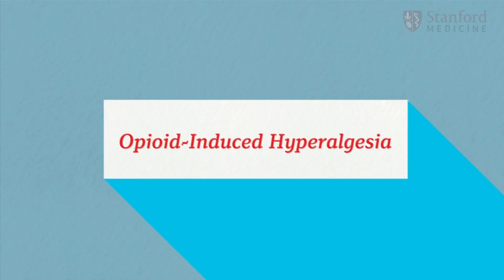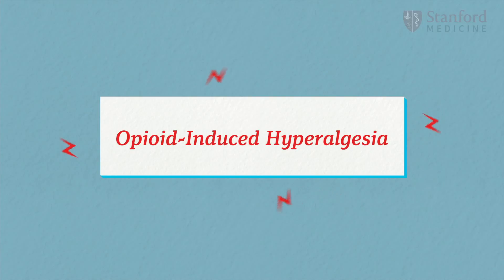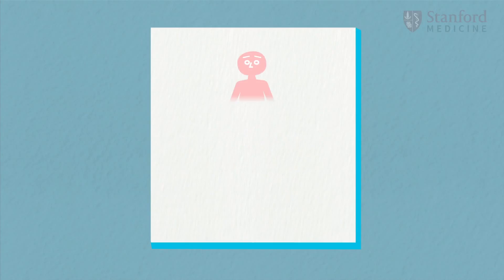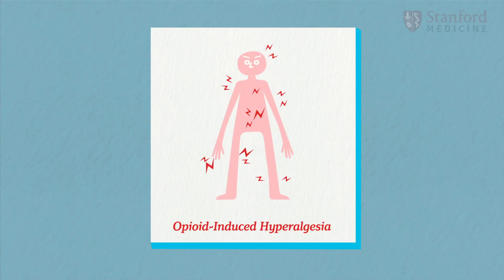Perhaps the most beguiling side effect of long-term opioid use is an increase in pain, also known as opioid-induced hyperalgesia. Some patients on opioids will experience an increase in pain over time, including experiencing pain in areas of the body where they originally had no pain. This phenomenon is not well understood but has been clinically appreciated and validated in human and animal experimental conditions.